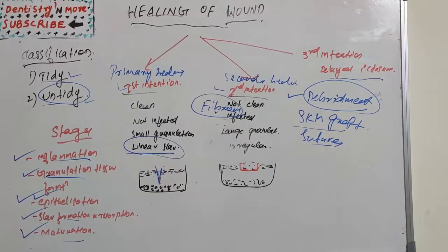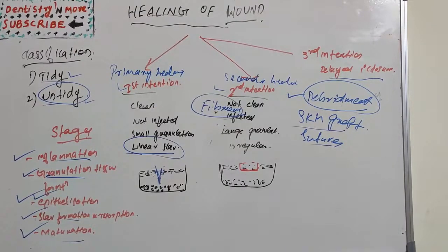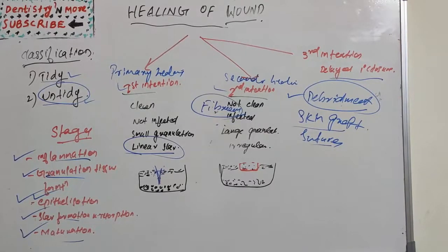Factors affecting wound healing include local factors such as infection, poor blood supply, tissue tension, hematoma, poor opposition of tissues, necrotic tissue, and foreign bodies. General factors include age, obesity, smoking, malnutrition, vitamin deficiency, anemia, malignancy, jaundice, diabetes, steroids, and other cytotoxic drugs.